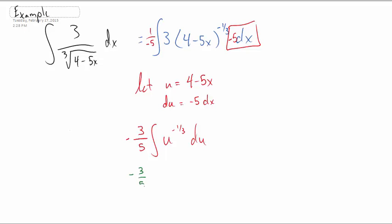So we have negative 3 fifths times, we're going to increase the exponent by 1. And then we're going to divide by that new exponent. So dividing by 2 thirds is the same as multiplying by 3 halves. That's how we divide fractions. And of course we put plus c.